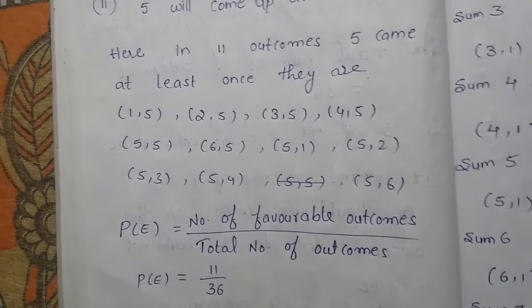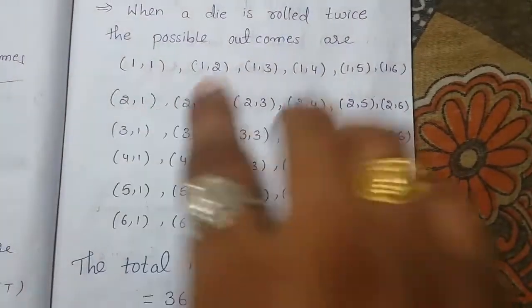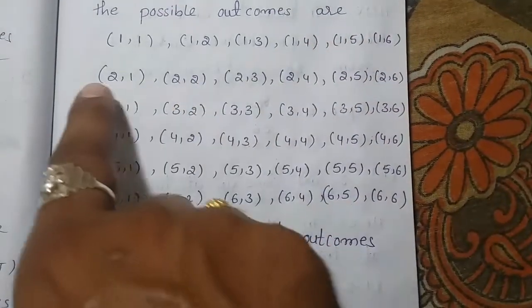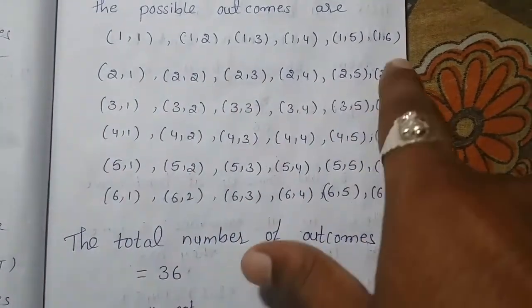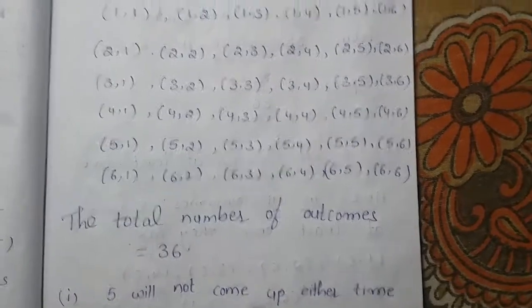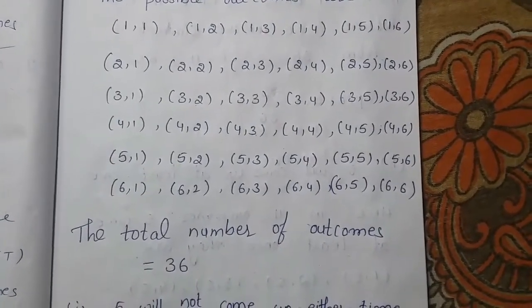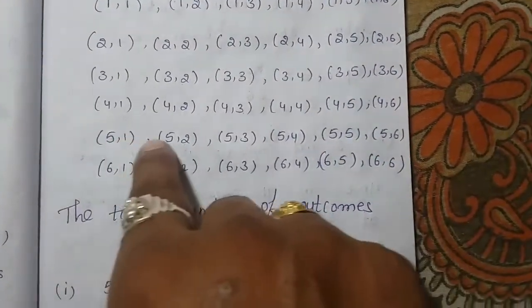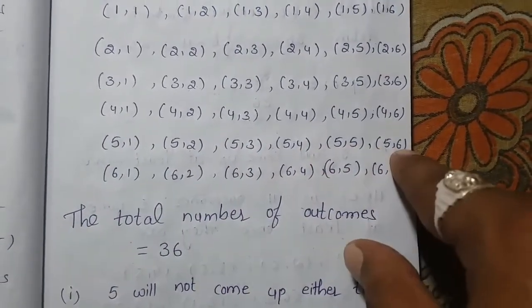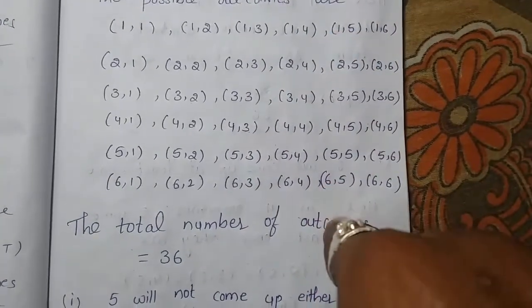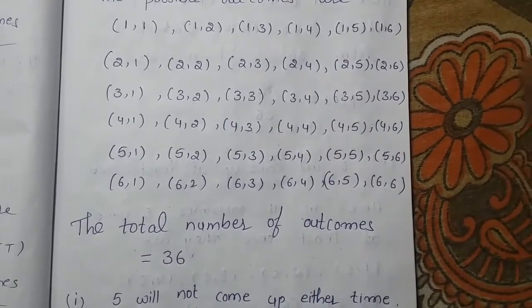The probability is the number of favorable outcomes divided by the total number of outcomes, which is 11/36. To summarize: for question one, 5 should not come either time — the favorable outcomes are 25, so the probability is 25/36. For question two, 5 should come at least once — the favorable outcomes are 11, so the probability of getting 5 at least once is 11/36.